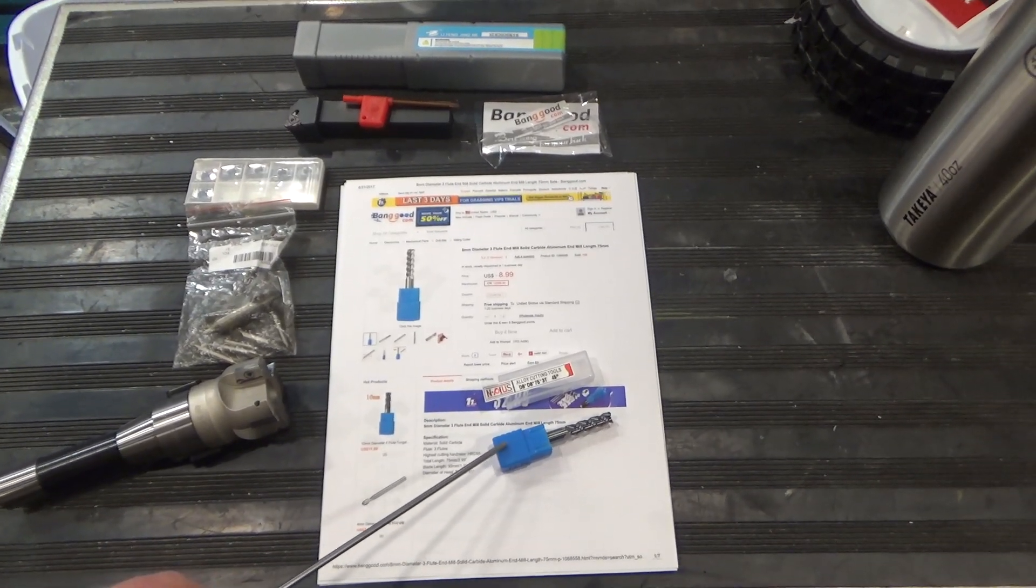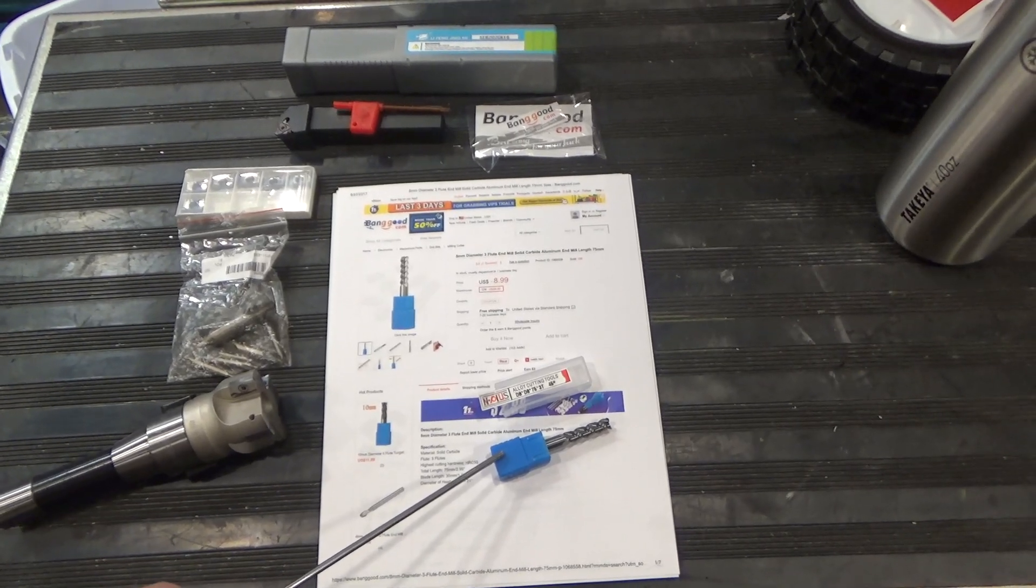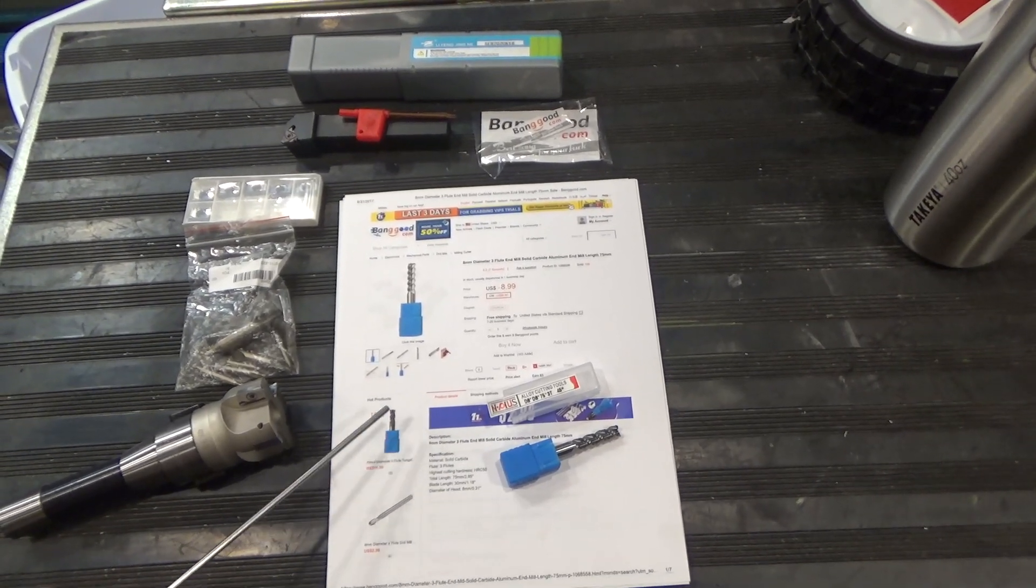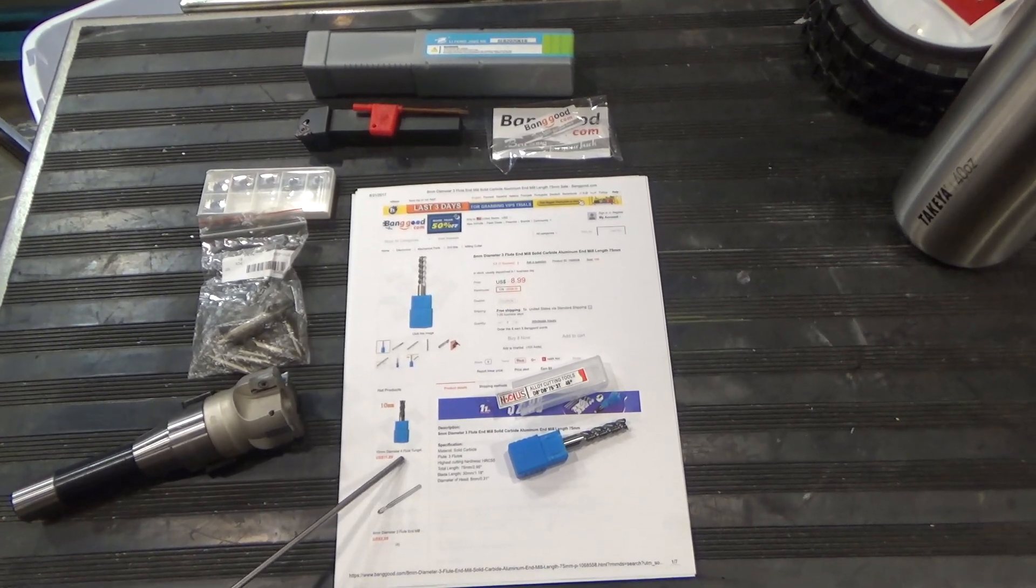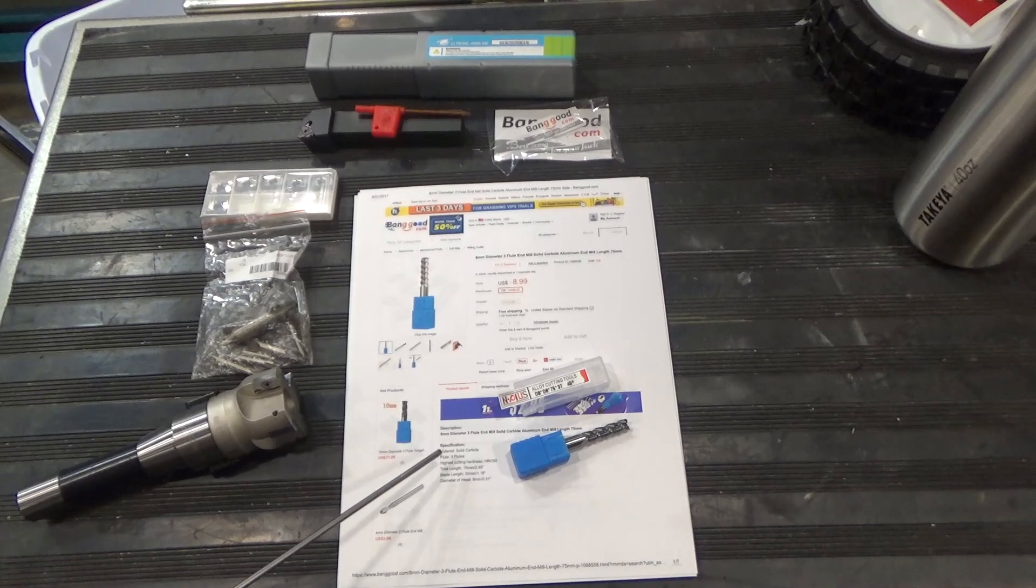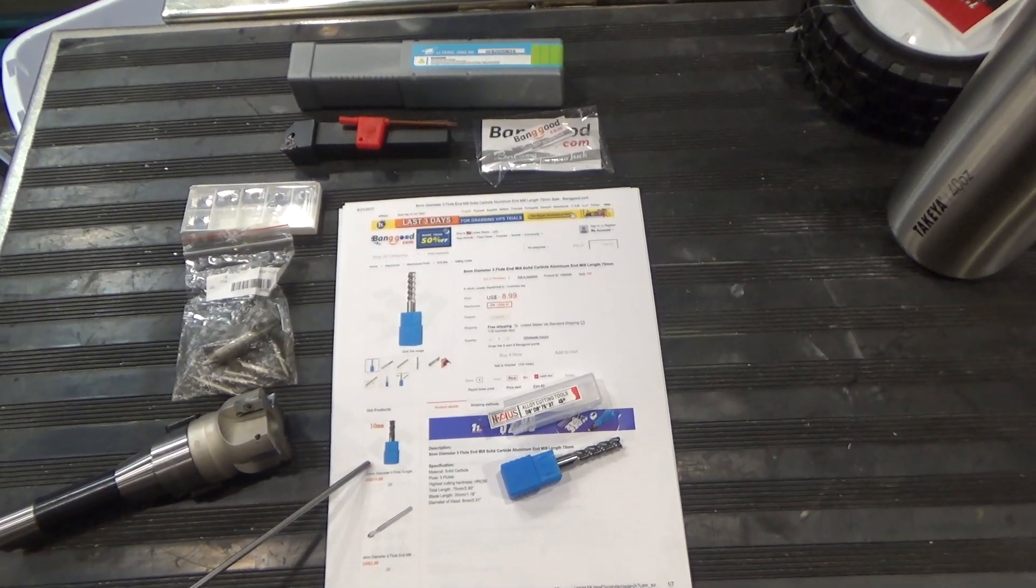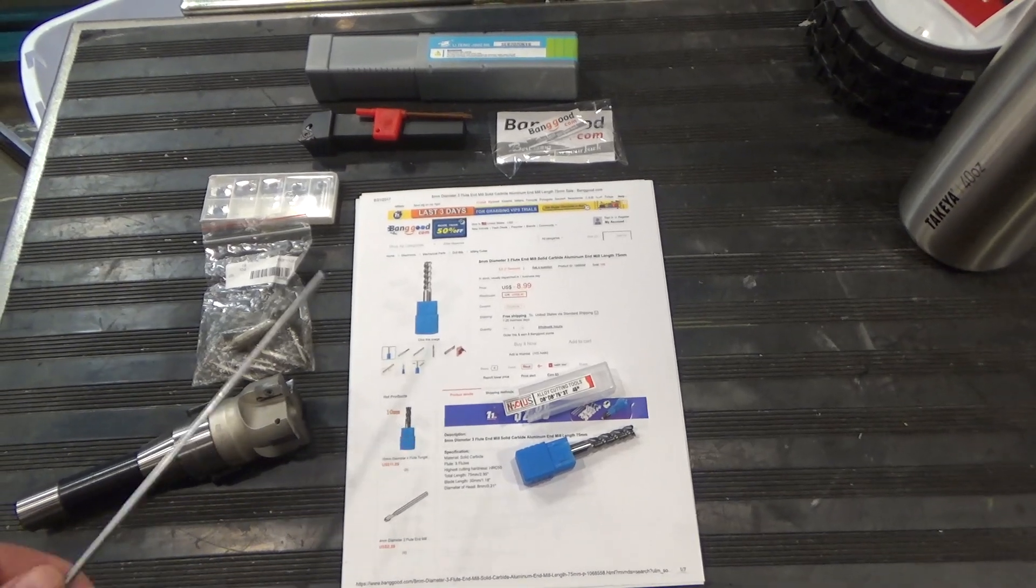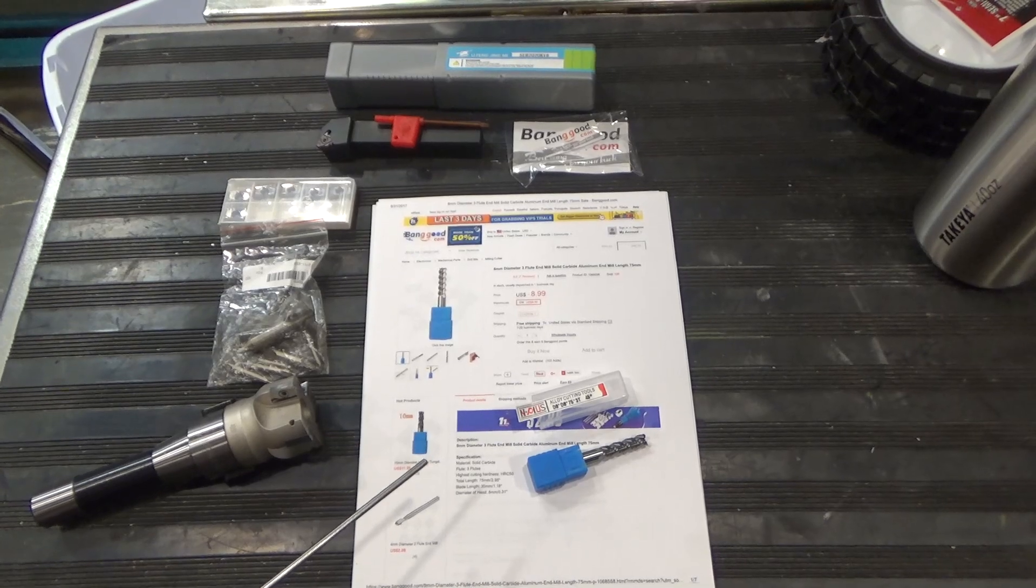Another thing that's very important to note is that this is an 8 millimeter diameter shank, and so although you can make it work in standard shank R8 collet, if you're going to use this kind of cutter often because of the price point, you might want to consider getting yourself a set of R8 collets in metric because that'll make it fit better and potentially not damage your collet.